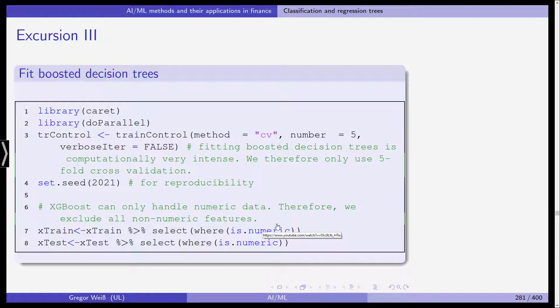So we want to fit a boosted decision tree. Again, caret package. We do this in parallel for faster computation. Five-fold cross-validation. So this is train control. As we are fitting boosted decision trees, it's quite computationally intense. We only use five-fold cross-validation.